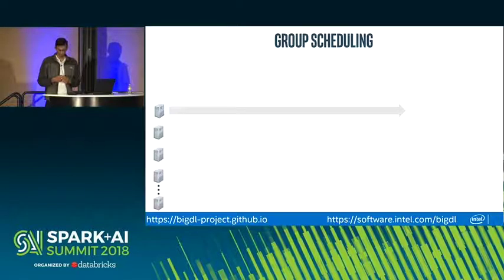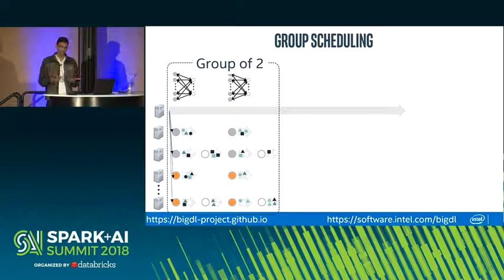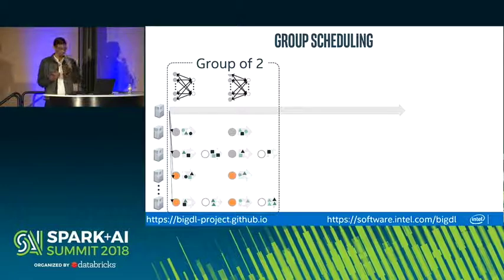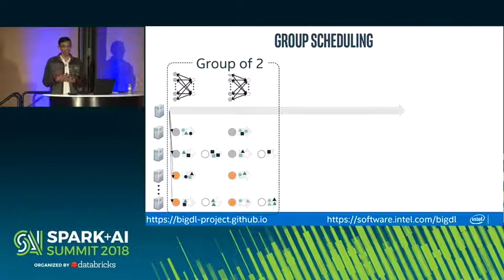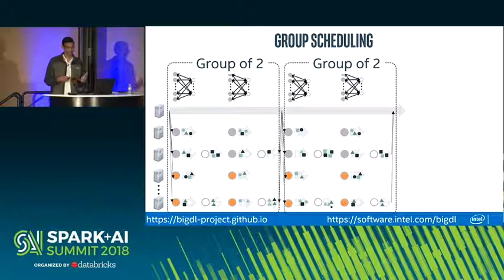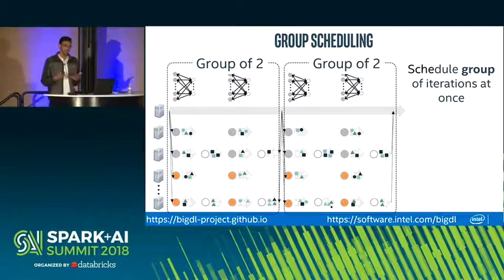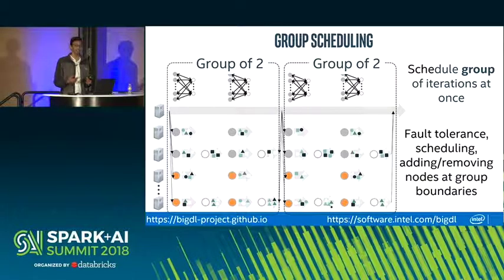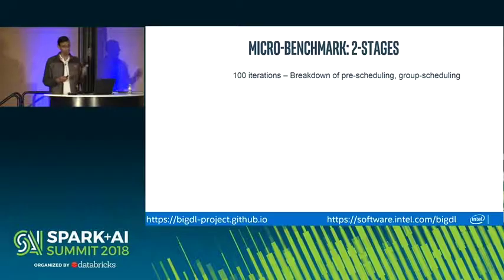The second technique is group scheduling. Instead of launching one iteration of computation at a time, we group multiple iterations together and launch computations for all iterations in the group simultaneously. For example, with a group size of two, all tasks for both iterations are sent to workers at once. Workers have logic built in to trigger tasks when their inputs are ready. As group size increases, the scheduler is only involved once at the end of every group — reducing overhead. The trade-off is that fault tolerance and scheduling happen only at group boundaries.